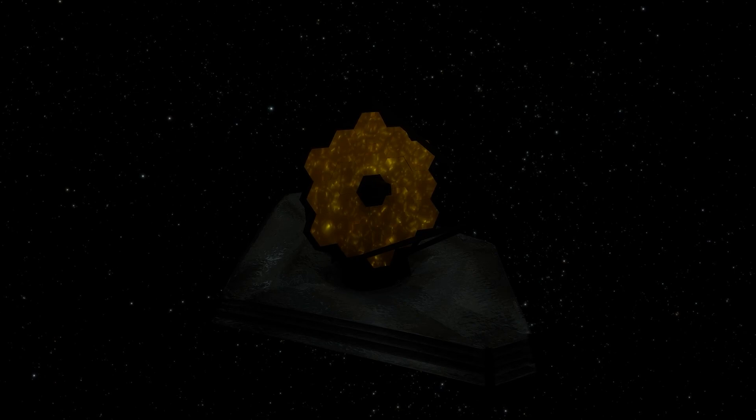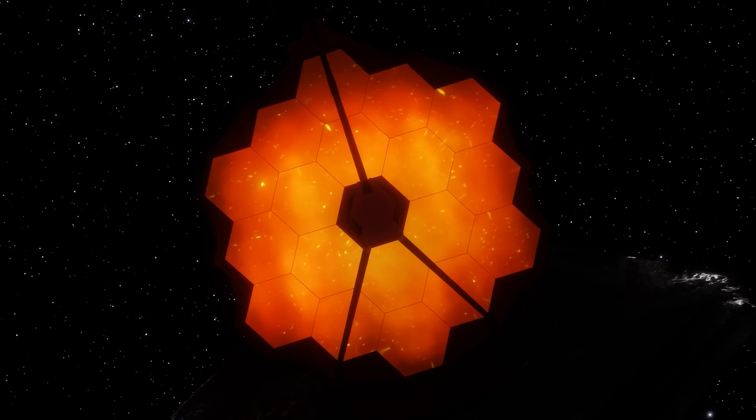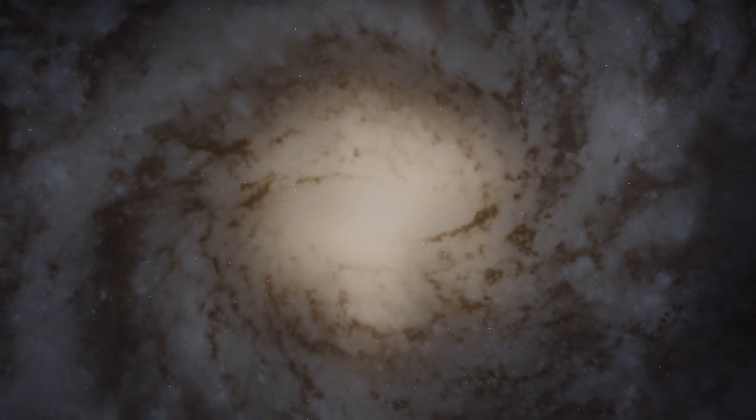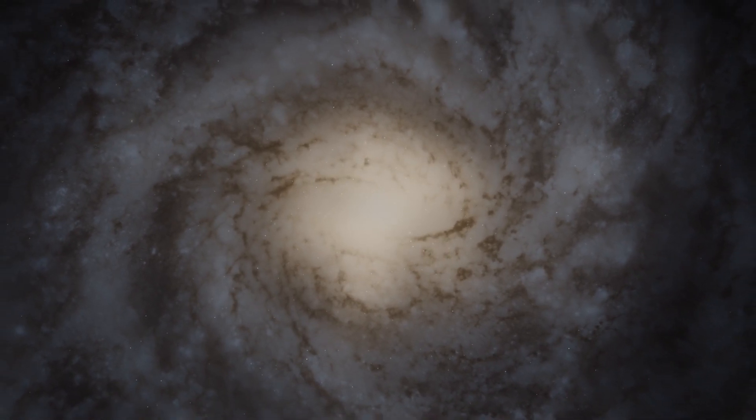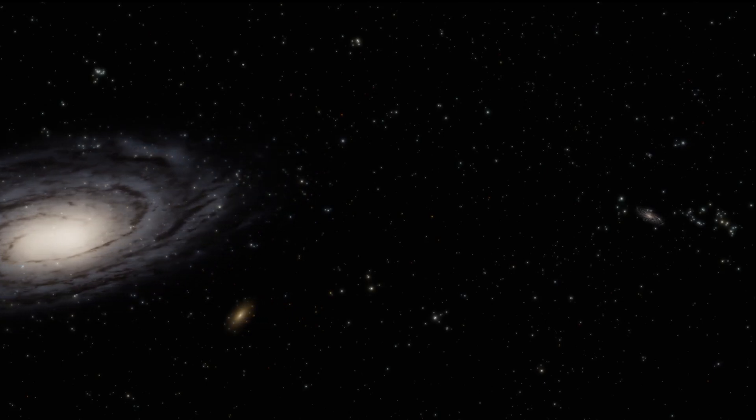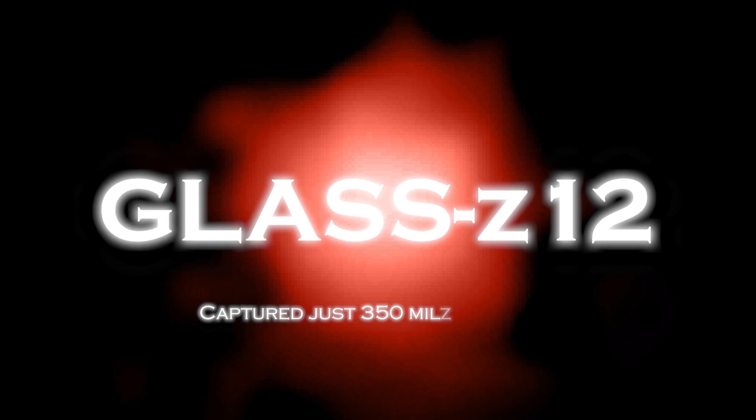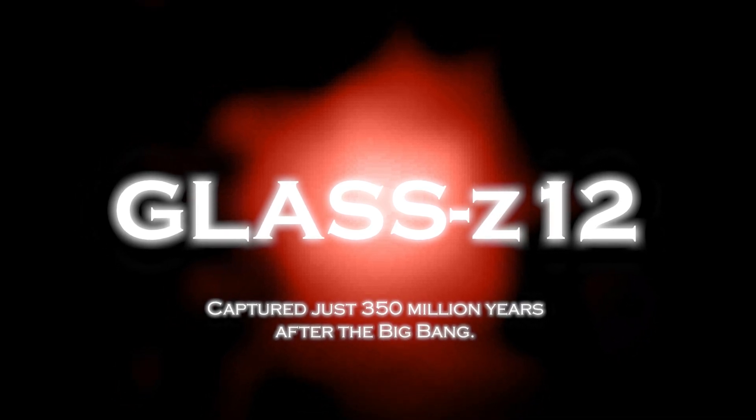The James Webb Telescope has gone beyond our expectations, revealing galaxies beyond our wildest dreams. And these are not just any galaxies, but some of the oldest galaxies that have ever existed and lie closest to the edge of the observable universe. The galaxy in question is known as GLAAD Z-12, captured just 350 million years after the Big Bang. Take a moment to reflect on this. We are talking about a galaxy that is more than 13 billion years old. The discovery has perplexed scientists and challenged their previous theories about the origins of the universe.